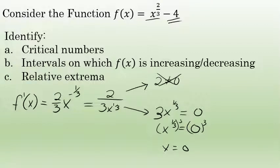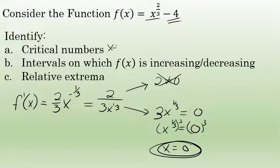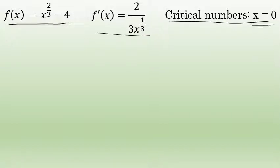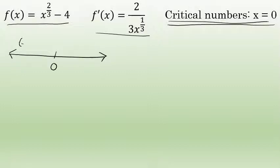So x = 0 is a number that makes this derivative not exist — x = 0 is the only critical number for the function f(x) = x^(2/3) - 4. The critical number x = 0 breaks this function's graph apart into two intervals: one interval from negative infinity to zero, and one interval from zero to infinity.